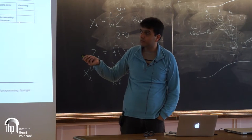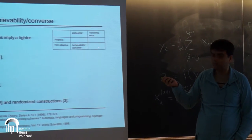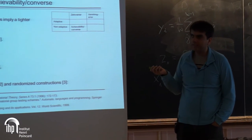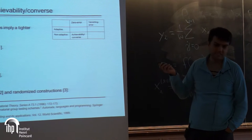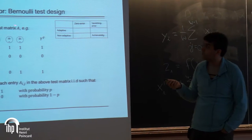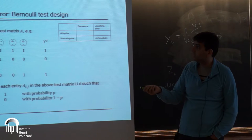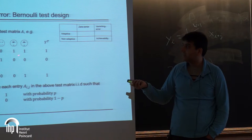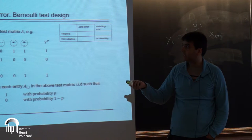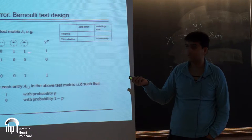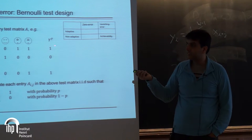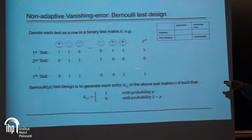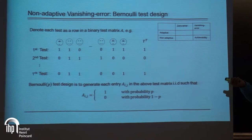Most of the rest of the talk I'll focus on vanishing error, non-adaptive, which is perhaps the most interesting case. Here's the notation: the n items are represented as columns, the t tests as rows. A 1 in the matrix means that item is included in that test. If a test includes at least one sick person, the test outcome is 1; if no sick people are included, the outcome is 0. The most analyzed approach uses a Bernoulli-p test design to generate this matrix. The value of p should be roughly 1/d — or ln(2)/d for the right constants — because you want groups of size roughly n/d.